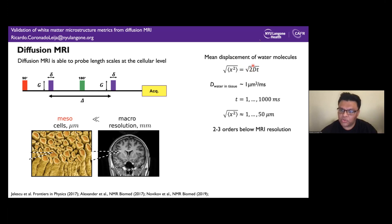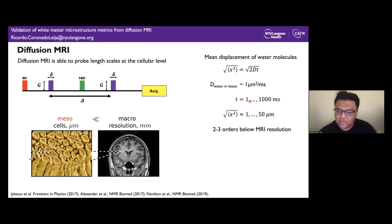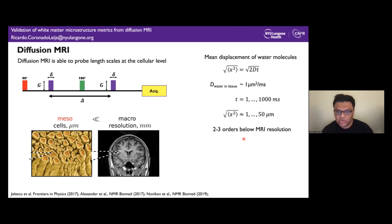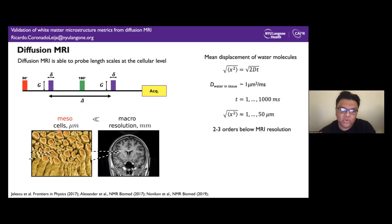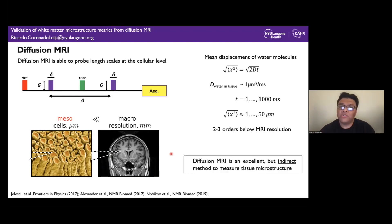By the diffusion time, and knowing that the diffusion of water in tissues is around one micrometer squared per millisecond, and the diffusion times used are between one and 1,000 milliseconds, diffusion MRI is sensitive to length scales of between one and 15 micrometers. This is two to three orders below the MRI resolution. Diffusion MRI is therefore a kind of super-resolution technique, going from millimeter MRI resolution down to micrometer or mesoscopy resolution — making us sensitive to cellular-level length scales.